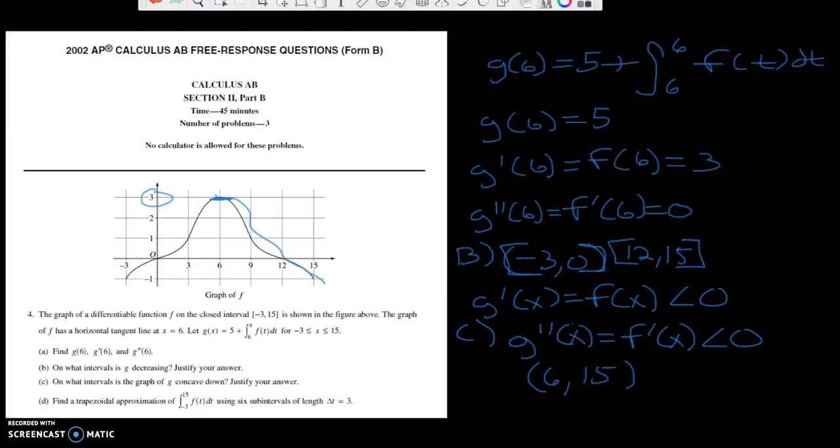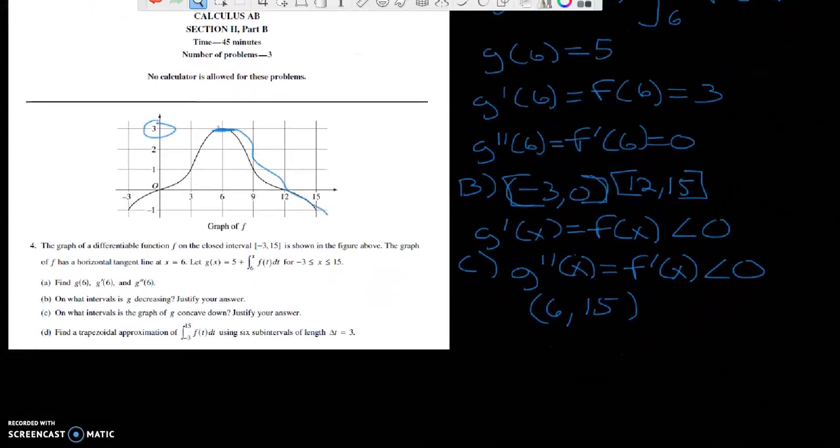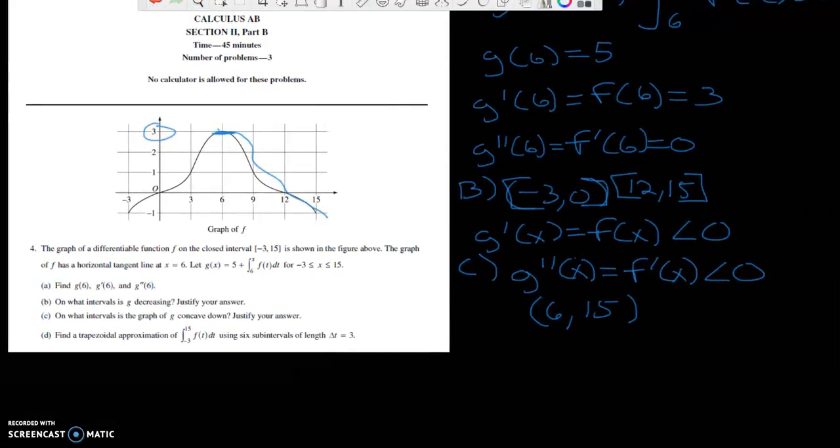Part D says find the trapezoidal approximation from negative 3 to 15 of f of t dt using 6 subintervals of length delta t equals 3. Okay, so give me one second while I move this so I get a little bit more canvas space. Okay, so now when you do this, basically the trapezoidal formula is h over 2.